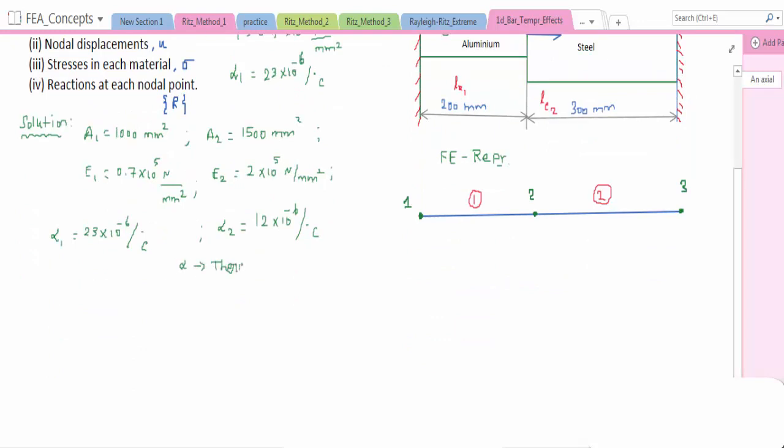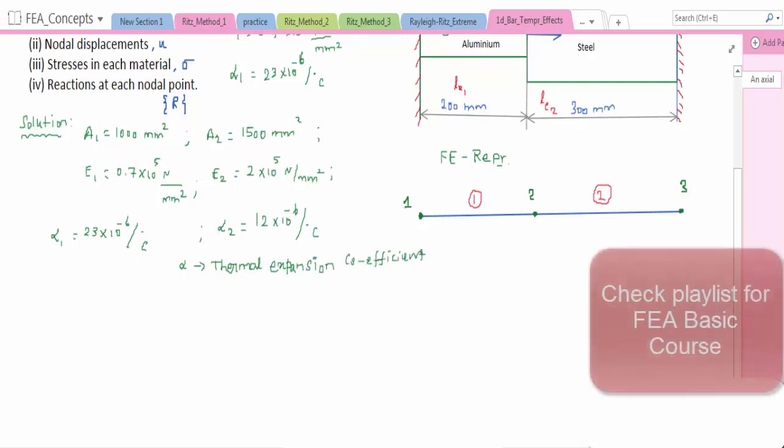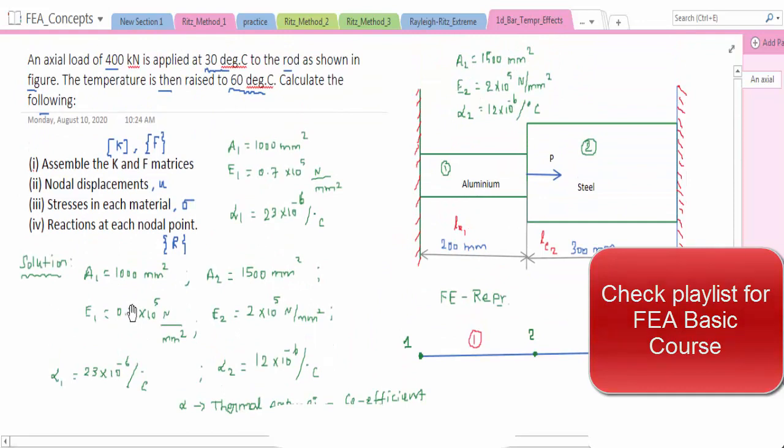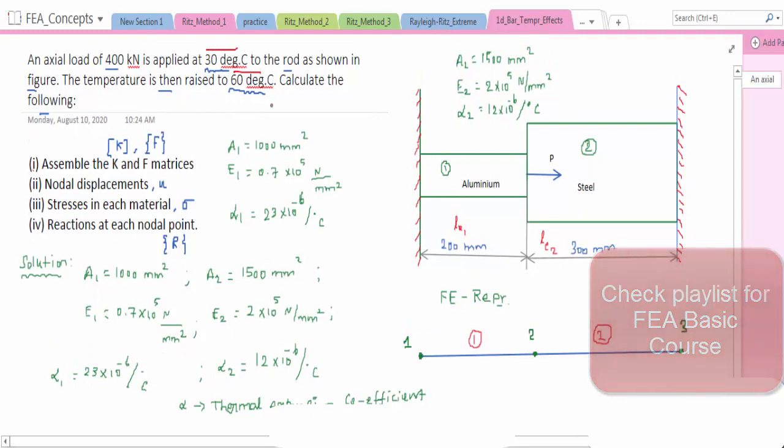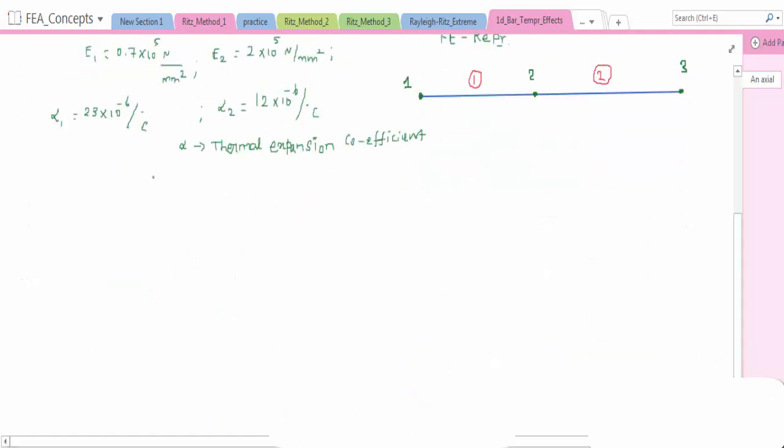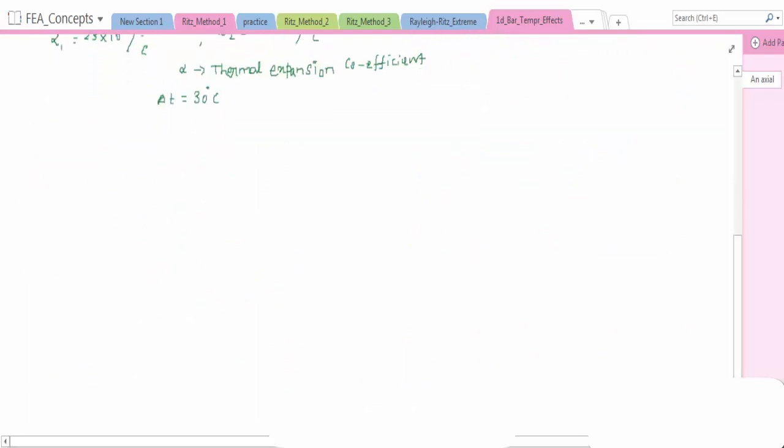Alpha is thermal expansion coefficient. From 30 to 60 degrees Celsius, the difference in temperature is 30 degrees Celsius. Let us calculate the K first.